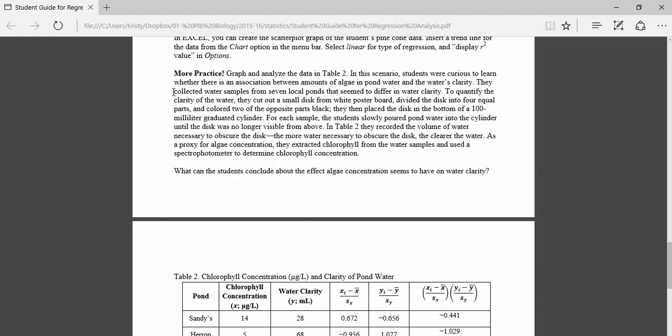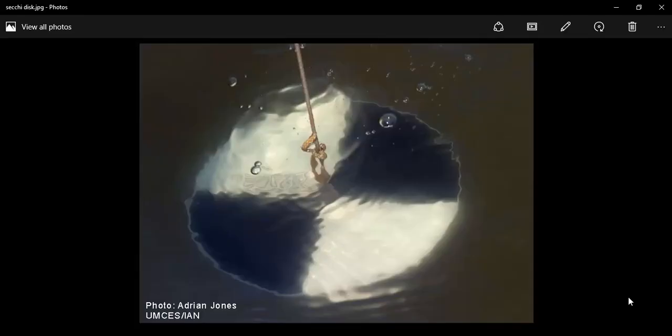To quantify the clarity of water, they did this really interesting thing where they cut out a small disc from white poster board and divided the disc into four equal parts and colored two of the opposite parts black. They're actually borrowing this procedure from a pretty well-known way of measuring water quality by scientists who are out studying ponds and looking at water chemistry and pond health. This thing is called a Secchi disc and the scientists will just lower it down into the water and they will wait until they can't see it anymore. Then they will mark a place on the rope so they know the depth that they have lowered this Secchi disc. And then they'll come back up and they'll measure that.